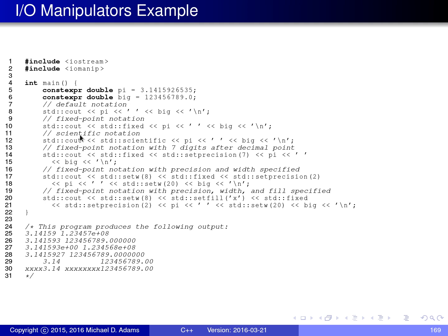Then I enable scientific notation using the scientific manipulator and output pi and big again. Pi prints as 3.141593 times 10 to the 0, and the large number prints as 1.234568 times 10 to the 8. In the next example I use fixed-point notation and specify the precision to 7, meaning 7 digits after the decimal point. Pi then prints with 7 digits after the decimal place, and the large number prints with 7 zeros after the decimal place.